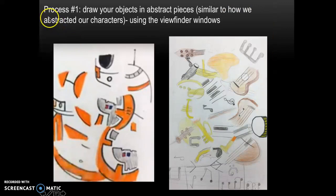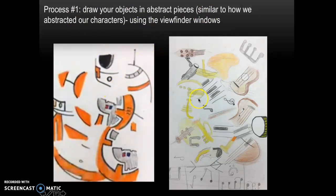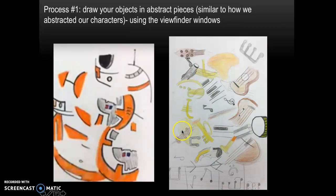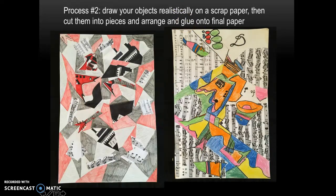There are three different processes you can start with. First, you could draw your objects in abstract pieces — similar to how we abstracted characters in our practice drawings using the viewfinder windows. Take a picture of a guitar, break it up into different pieces, draw and color those pieces, then fill empty spaces with more instruments and things that relate to music, drawing right onto your final copy paper. The second process is to draw your objects realistically on scrap paper, then cut them into pieces and arrange and glue them onto your final paper.